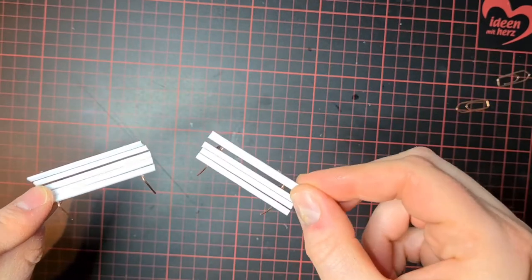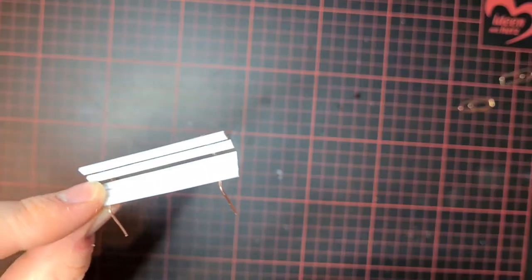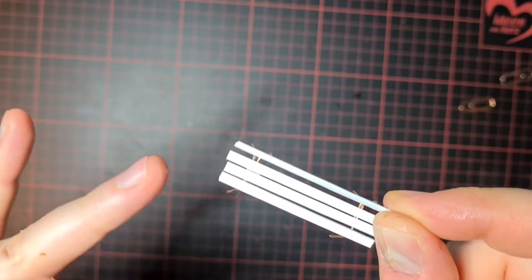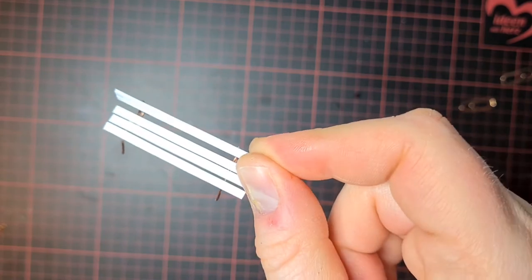If you like a bit of a ramshackle look like I do, you can leave it like that. Or you could also make another cut to have one straight line.